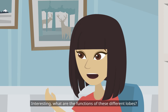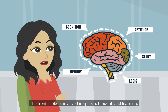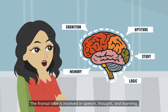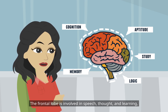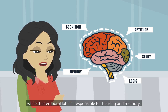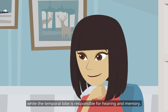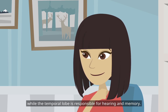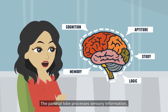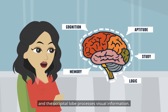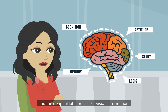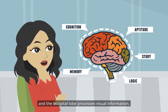What are the functions of these different lobes? The frontal lobe is involved in speech, thought, and learning, while the temporal lobe is responsible for hearing and memory. The parietal lobe processes sensory information, and the occipital lobe processes visual information.